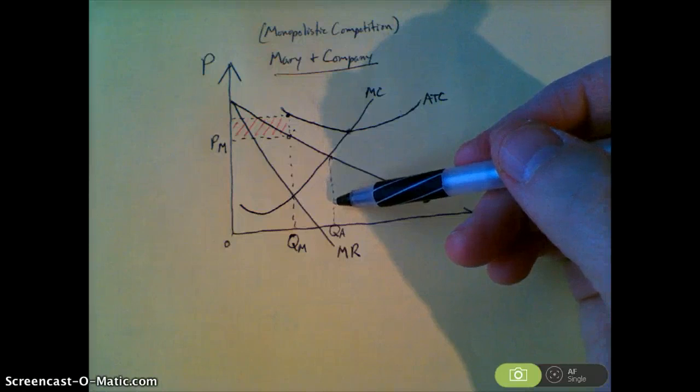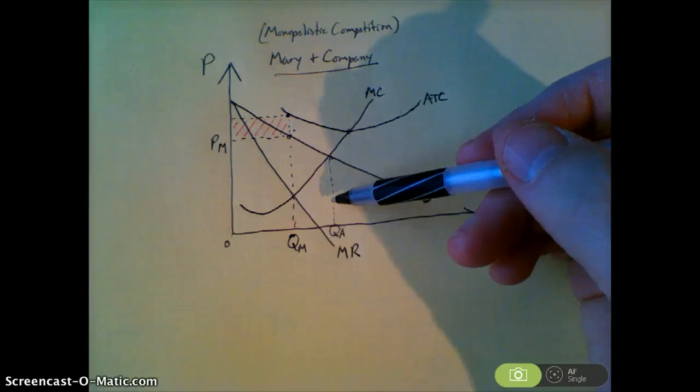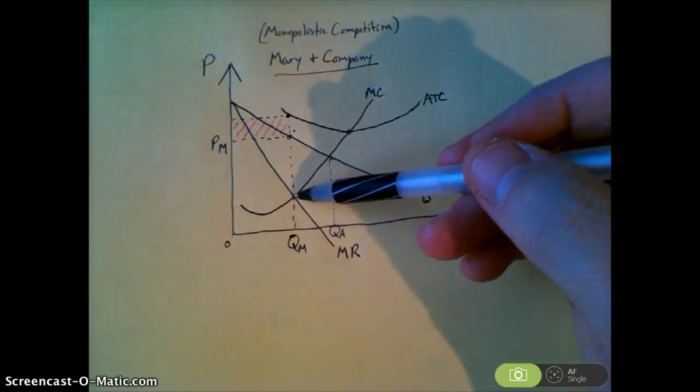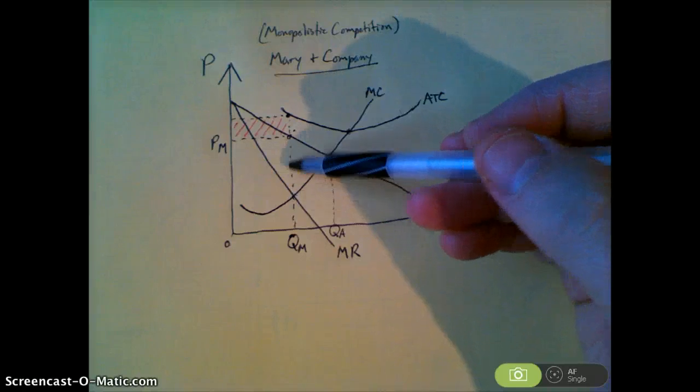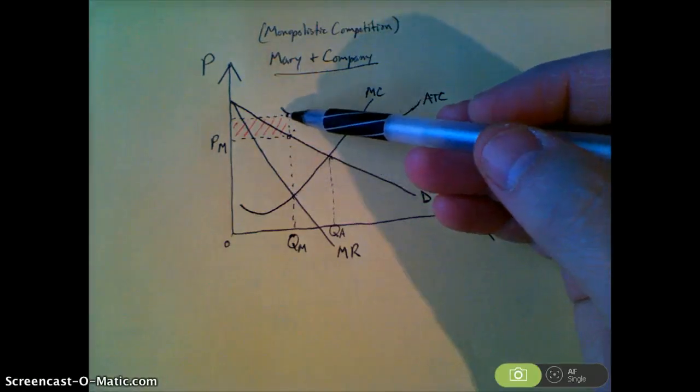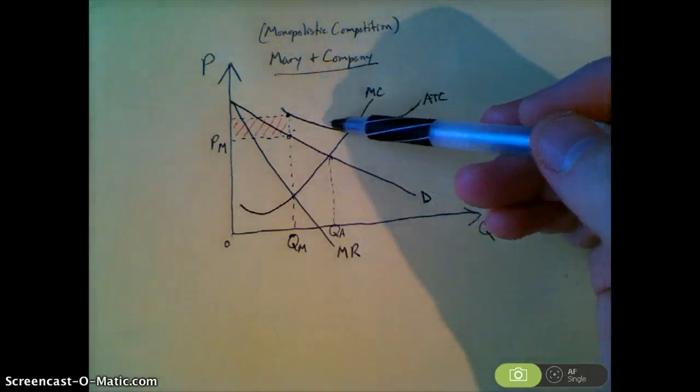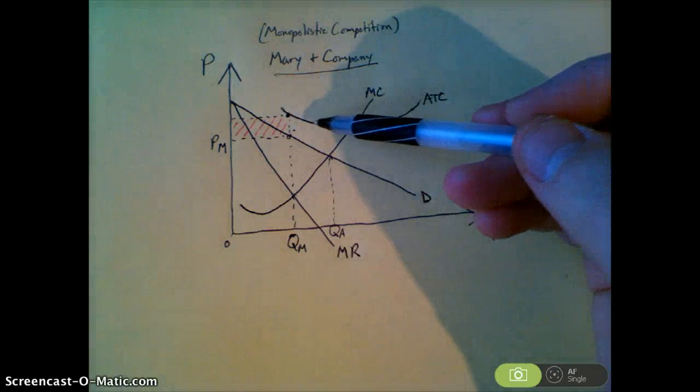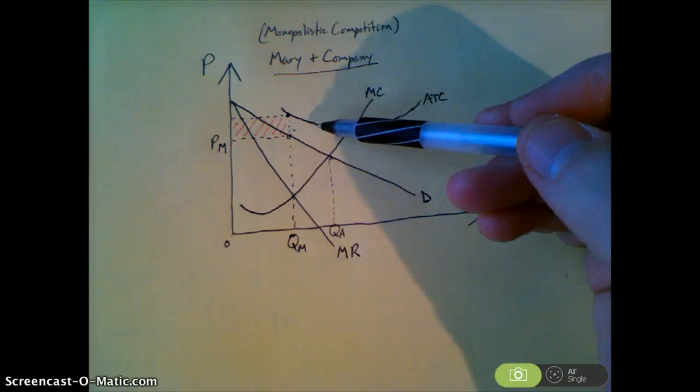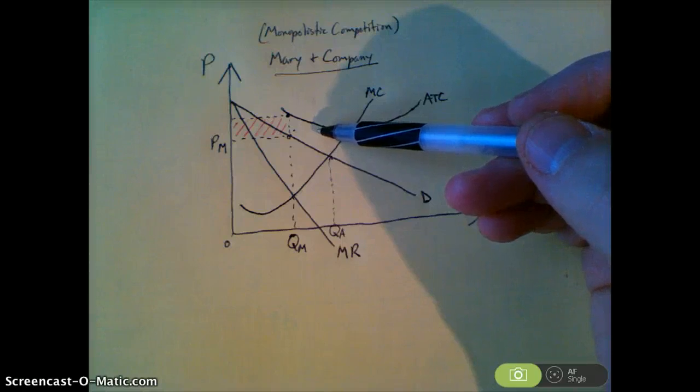And then the last question is E. In the long run, will the company be operating in a region where economies of scale exist? Well, if you look, they're going to operate where MR and MC are equal, and their average total cost is here. And since on this portion of the average total cost curve, increasing output would cause the average total cost to decrease, they are operating in a region where economies of scale exist. Their average total cost, in terms of explaining it, you would just say that by increasing output, average total costs would decrease. And that means they would experience economies of scale by expanding that output.